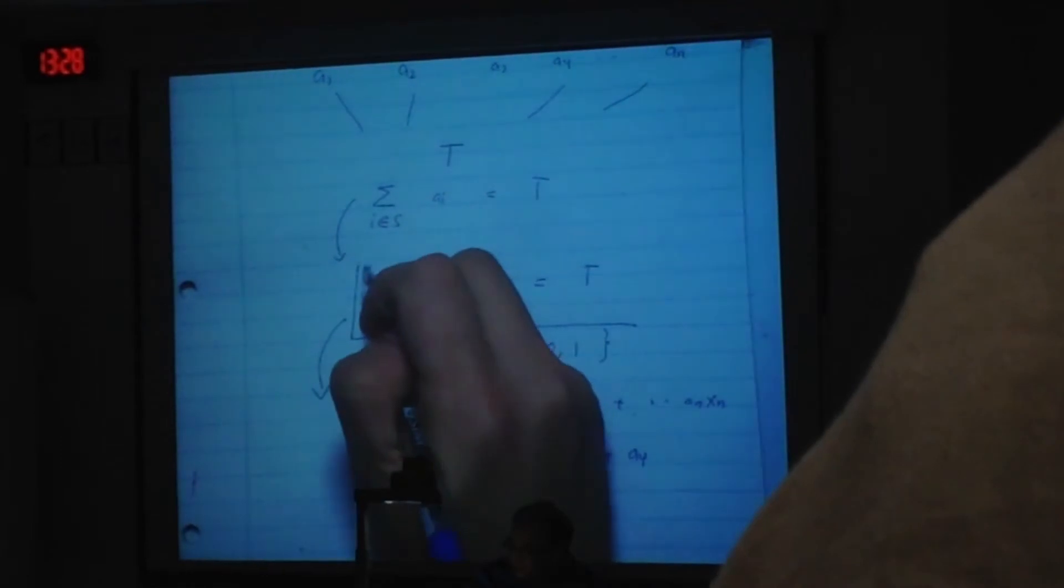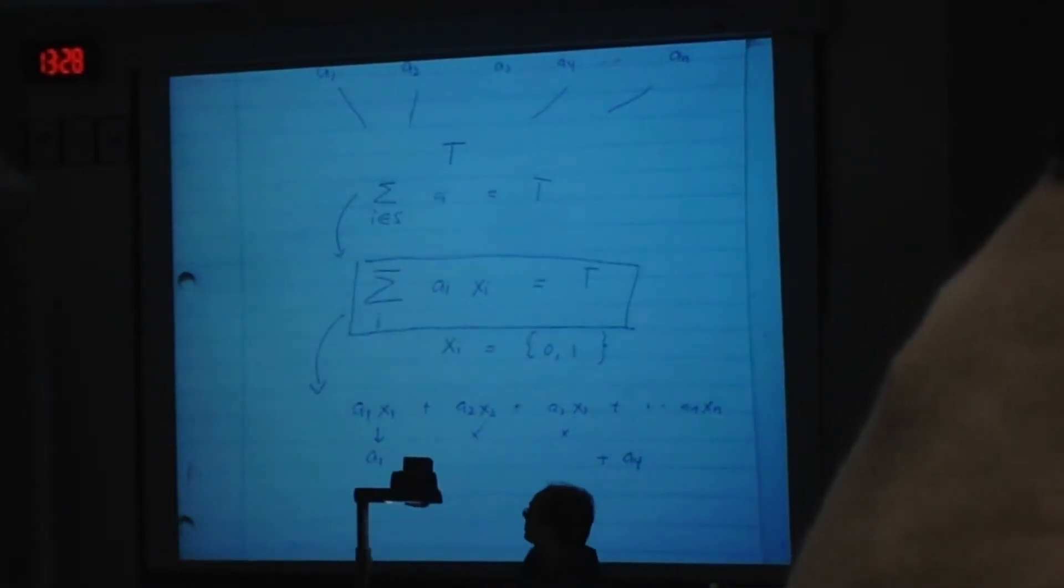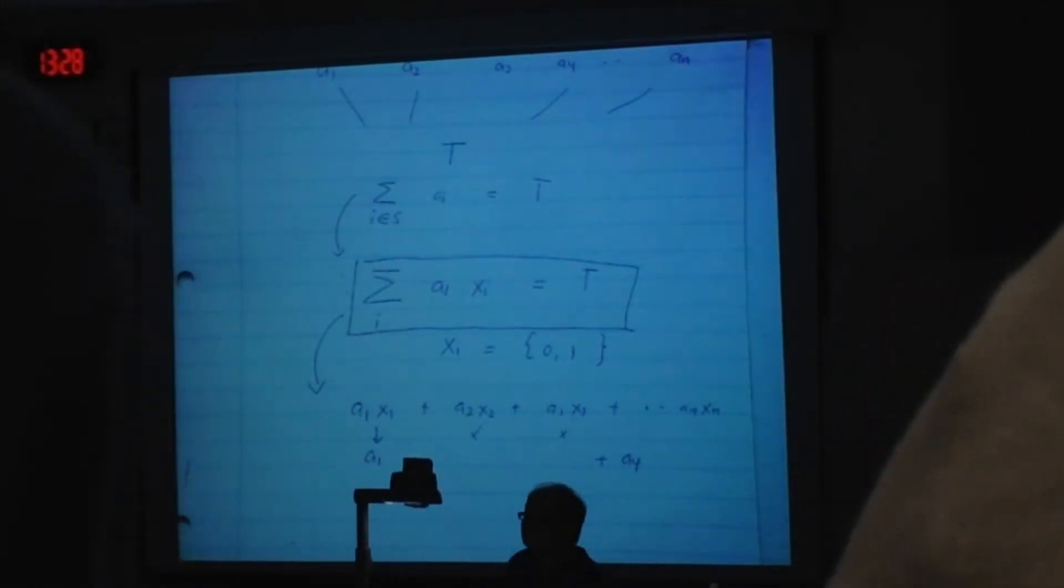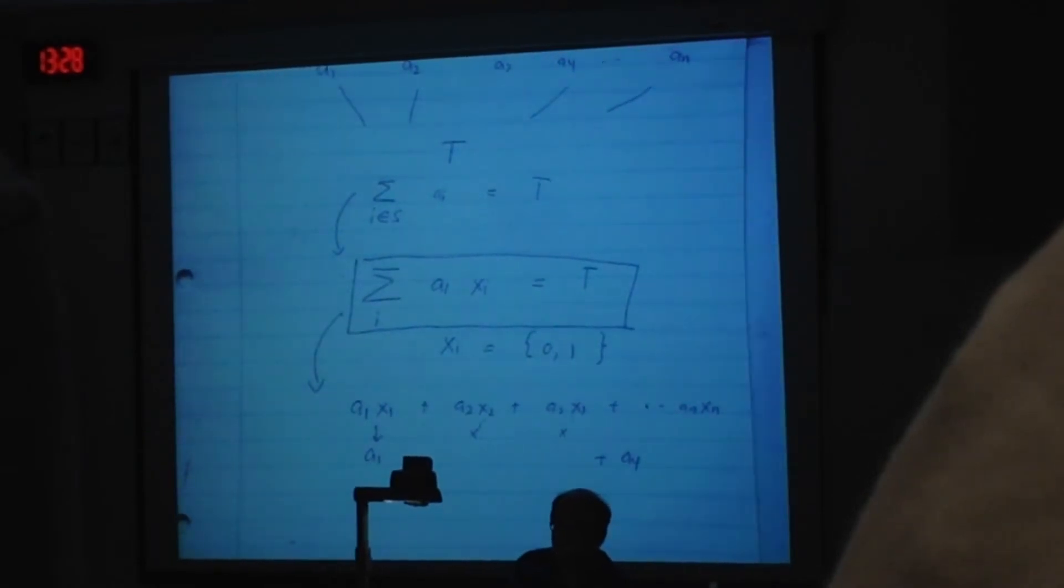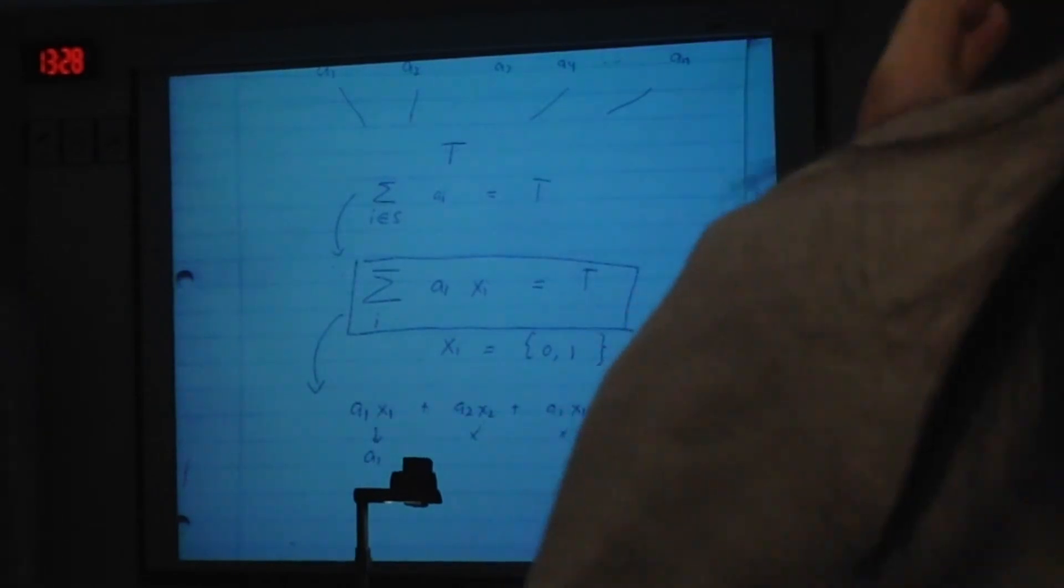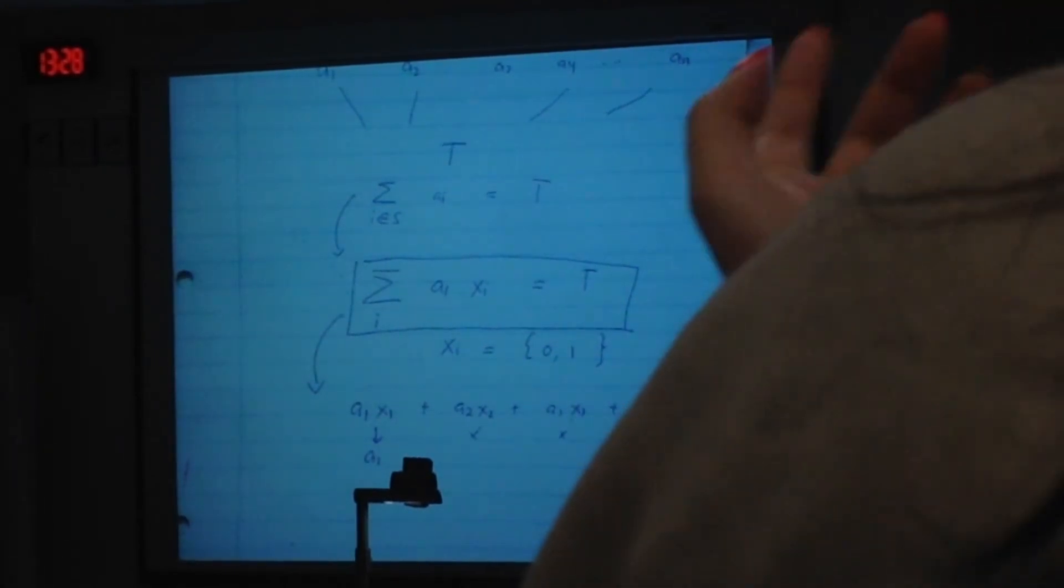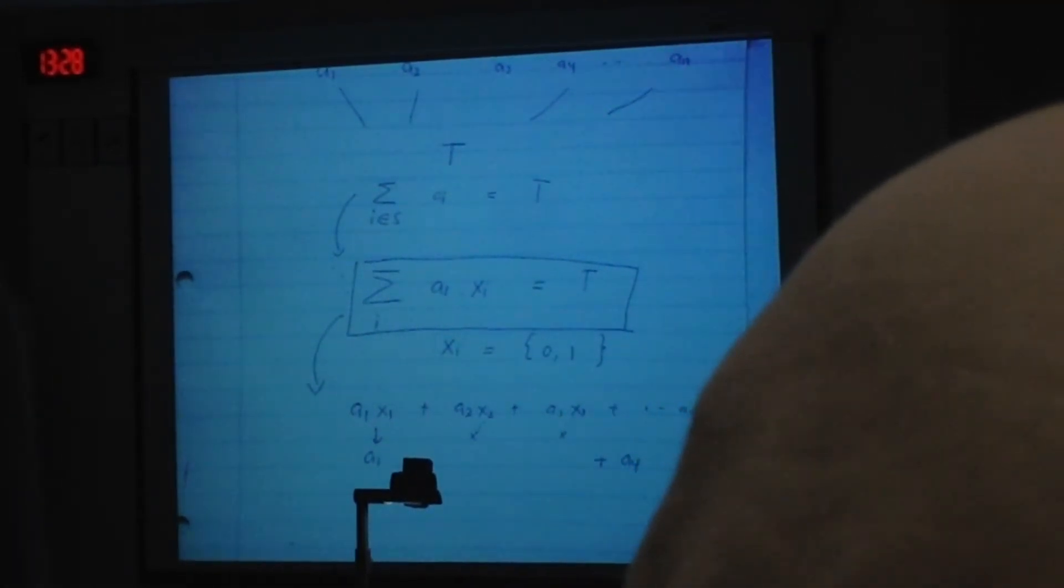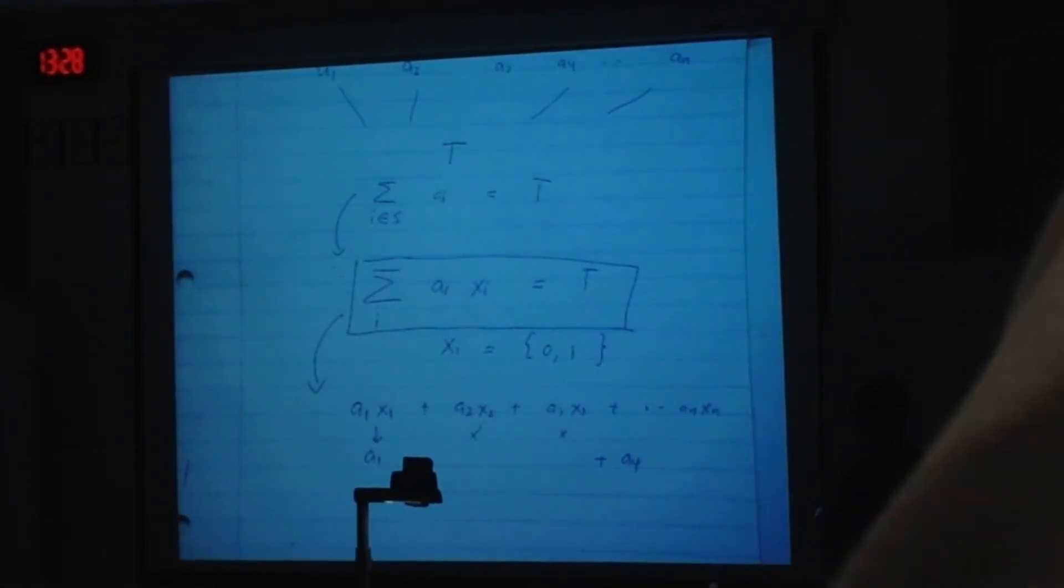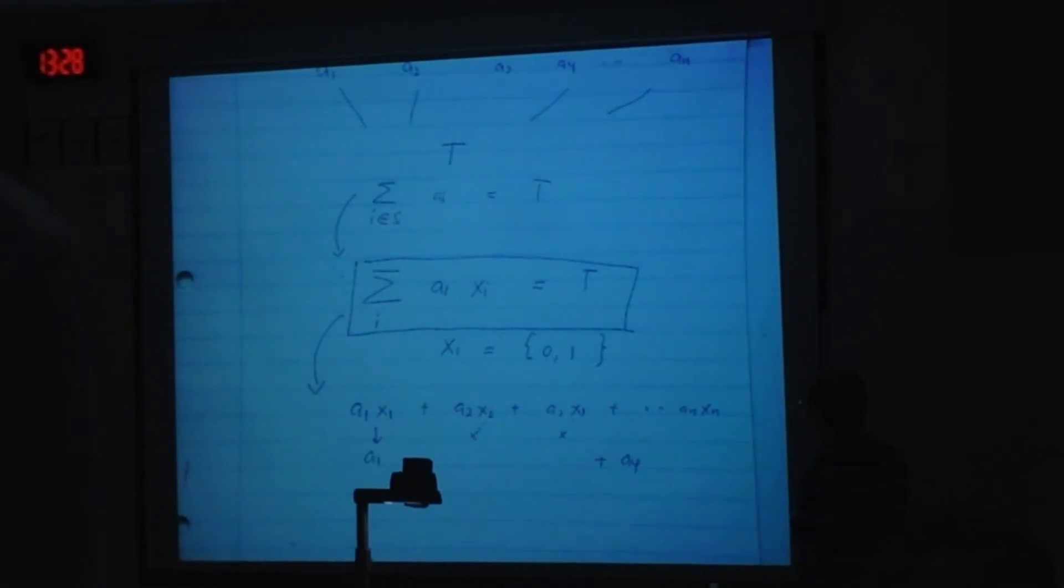Alright, so that's why the notation can be changed to something like this. It's just to formally denote this. That would be easier if you denote it like that, where X_I is either 0 or 1. That's the formalization of the knapsack problem.